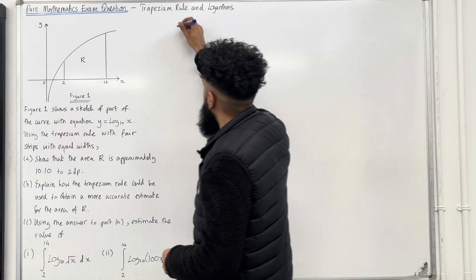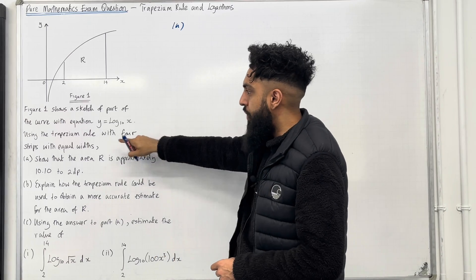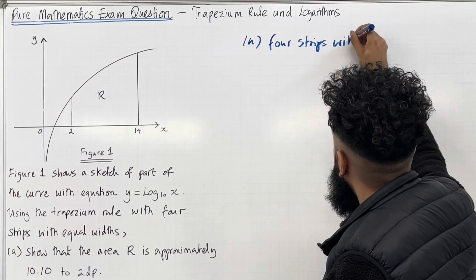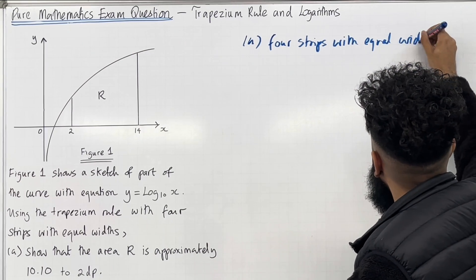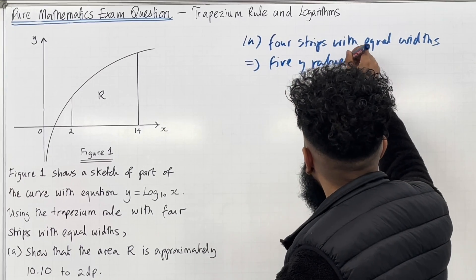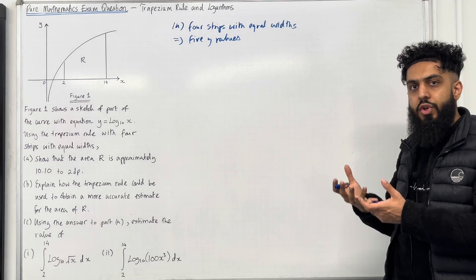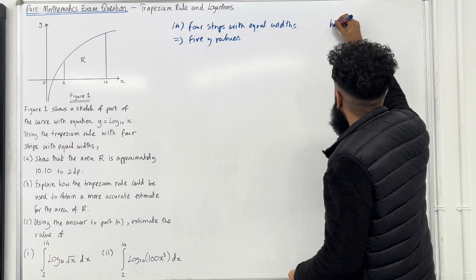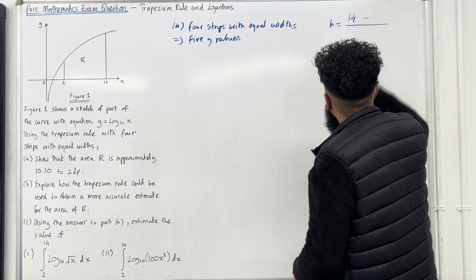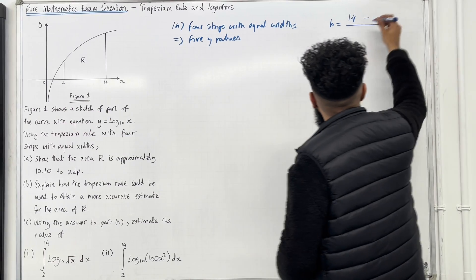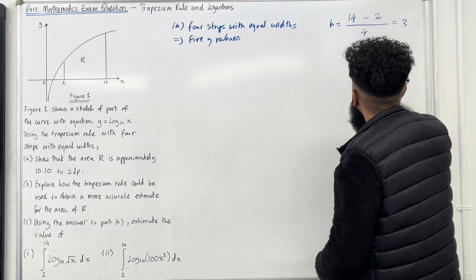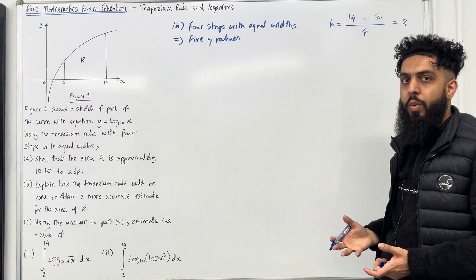Let's have a look at the solution to part A. We have 4 strips with equal widths, which implies that we will have 5 y-values. Now let's work out the height h of each trapezium. The height h is given by the upper limit, which is 14, take away the lower limit, which is 2, divided by the number of strips, which is 4. This gives me 3. Now I'm going to construct a table of x and y values.